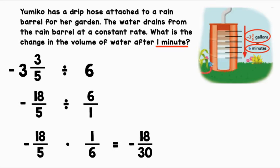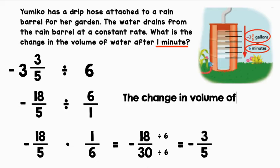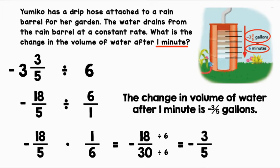Now let's simplify this fraction. 18 and 30 are both divisible by six, so let's divide by six. 18 divided by six equals three. 30 divided by six equals five. The change in volume of water after one minute is negative three-fifths gallons.